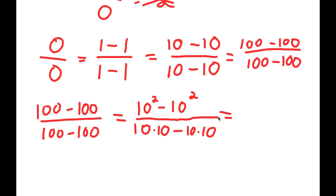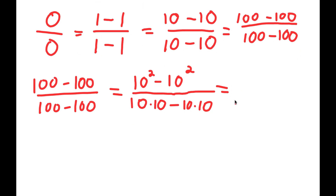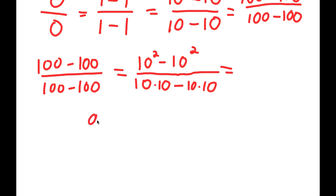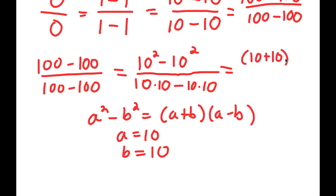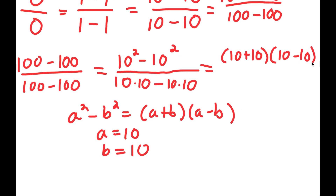The reason I did this is because if I have something in the form a squared minus b squared, this is equal to a plus b times a minus b. So in this case, I have 10 squared minus 10 squared, and a and b are both 10. So I get 10 plus 10 times 10 minus 10, over 10 times 10 minus 10 times 10.